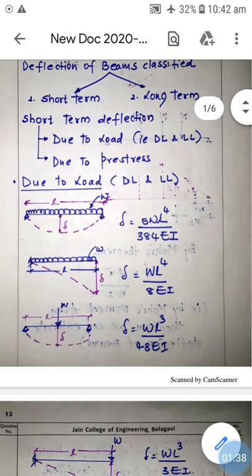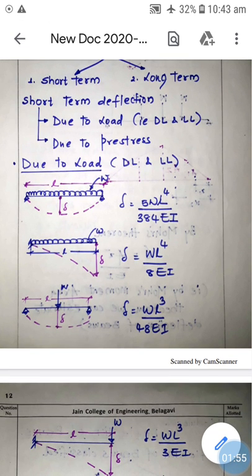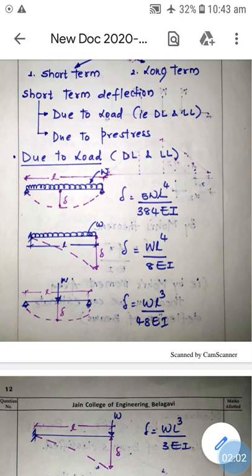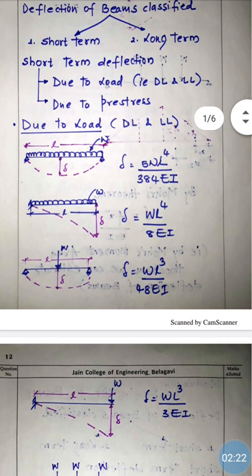For dead load and live load, there are different types of beams with different end conditions and load intensities. First, for a simply supported beam with UDL over span L, deflection is always maximum at mid-span. The maximum deflection is calculated as: δ = 5WL⁴ / 384EI. Note these equations are for simple beams, not prestressed beams.